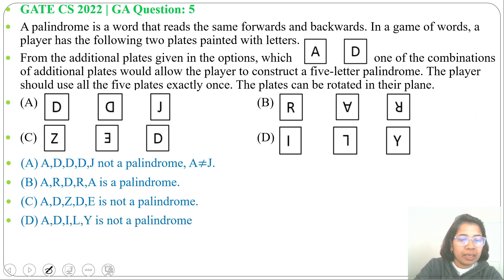So answer will be option B. A, R, D, R, A is a palindrome. Even we can make two palindromes by using R, A, A, R with A, D.